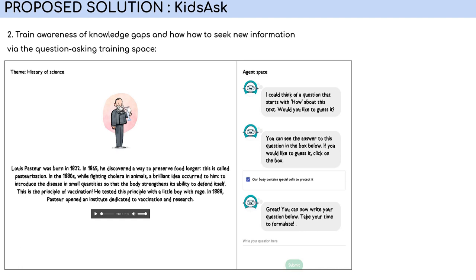In this example, the piece of information is 'our body has special cells to protect it from viruses.' The child is then asked by the agent to use these cues to find the corresponding question. For this example, one possible question would be 'how does our body protect itself from viruses?'